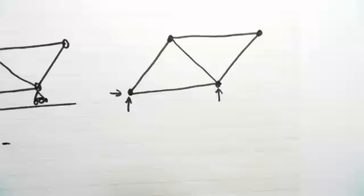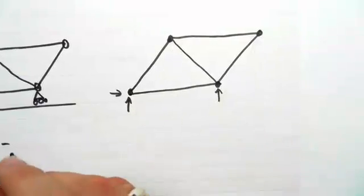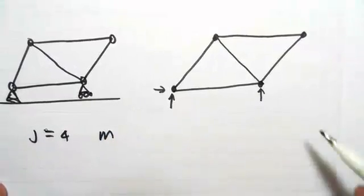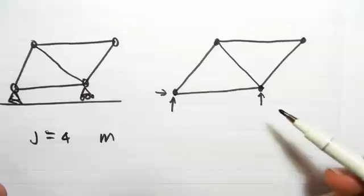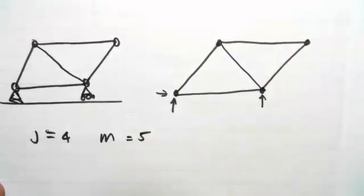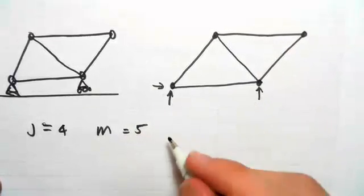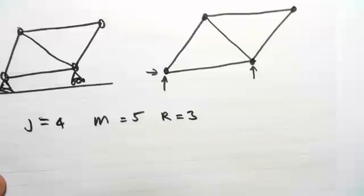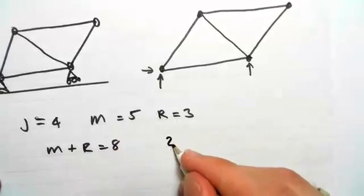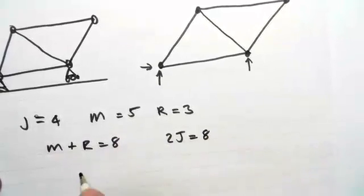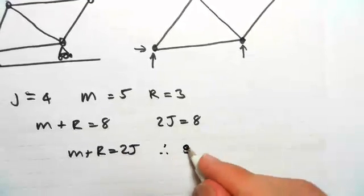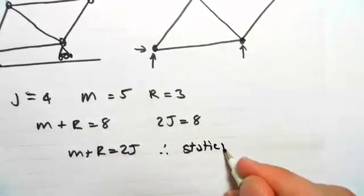Let's work out what J is: J equals 1, 2, 3, 4 — so J equals 4. Then M, the number of force members — all of these members have forces in them — so M equals 5. And reaction forces: 1, 2, 3 — so R equals 3. Now M plus R equals 8, and 2J equals 8. Therefore M plus R equals 2J, and therefore it is statically determinate.